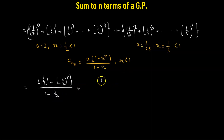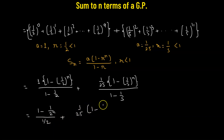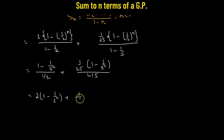Added to the second sum: 1 over 25, the first term, multiplied by (1 minus 1 over 5 raised to the power of n), divided by (1 minus 1 over 5). This equals (1 minus (1/2)^n) divided by one-half, plus 1 over 25 multiplied by (1 minus (1/5)^n) divided by 4 over 5. So this gives us 2 times (1 minus (1/2)^n), plus 1 over 20 multiplied by (1 minus (1/5)^n). So this is going to be the sum.